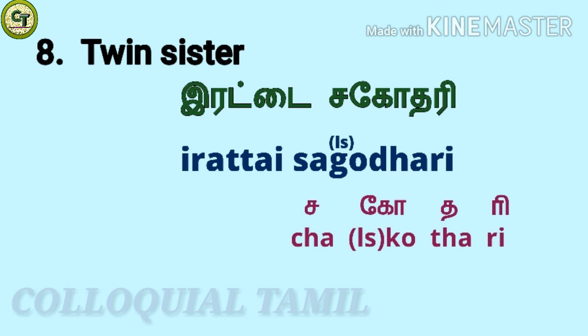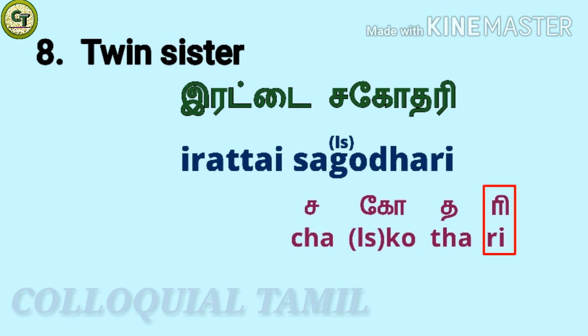For twin sister: irattai sagodari. You already know 'irattai'. For 'sagodari', just remove the last two letters from 'sagodharar', which we learned for the previous word, and add the short vowel 'ri' at the end. Sagodari. Irattai sagodari.